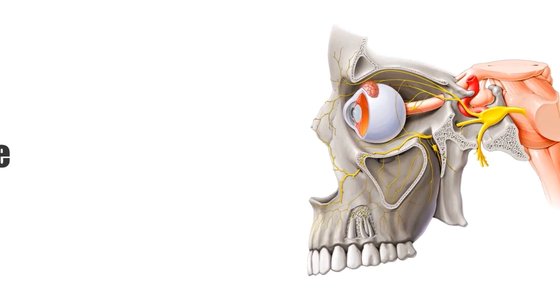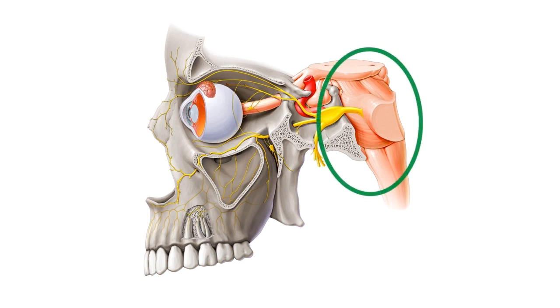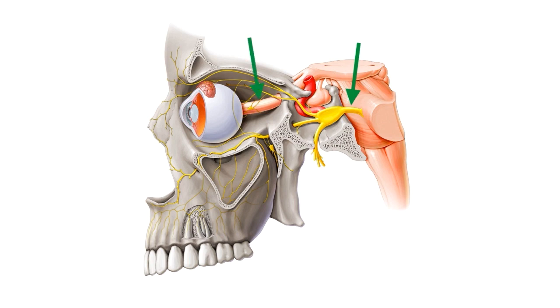Hey everyone, it's Nicole from KenHub, and today we're going to be talking about the ophthalmic nerve. During this tutorial, we'll be using this lateral view of the cranium and brainstem to look at the ophthalmic nerve, with our brainstem over here on the right, with the trigeminal nerve and the optic nerve emerging and then passing through to the orbit and the eyeball.